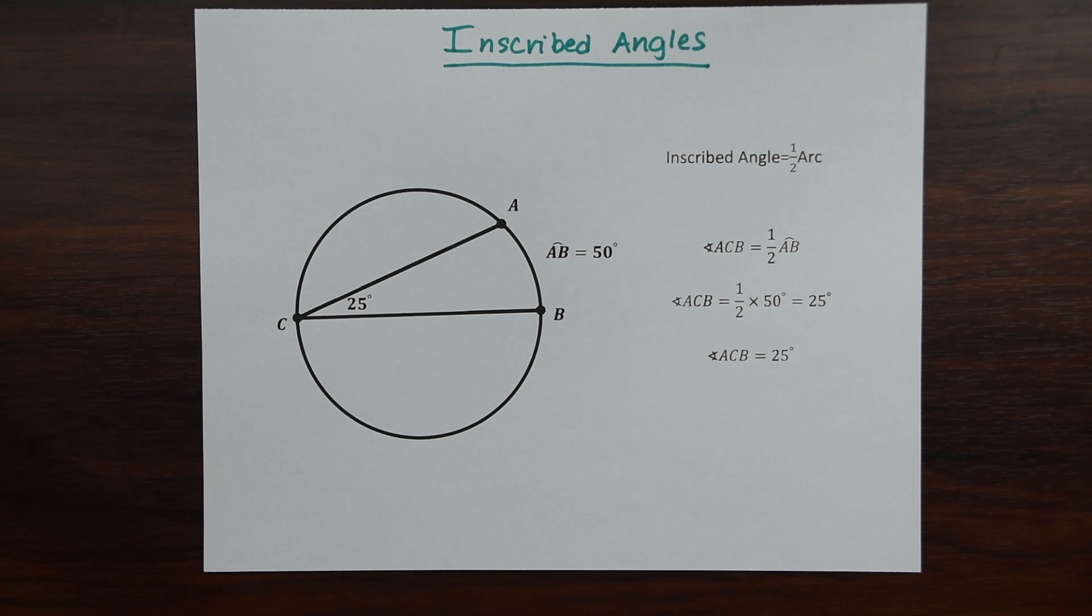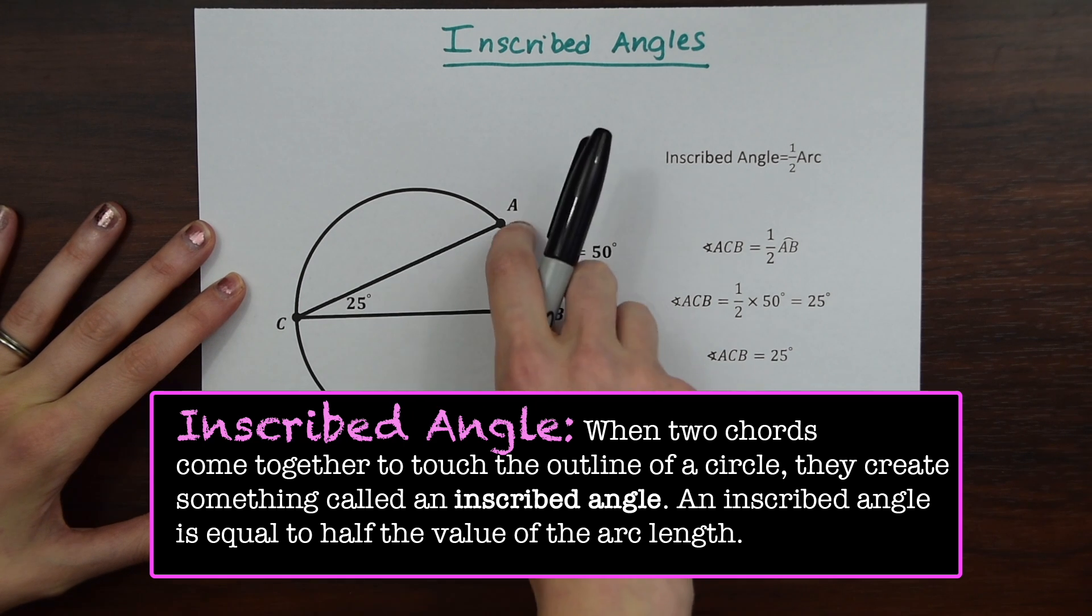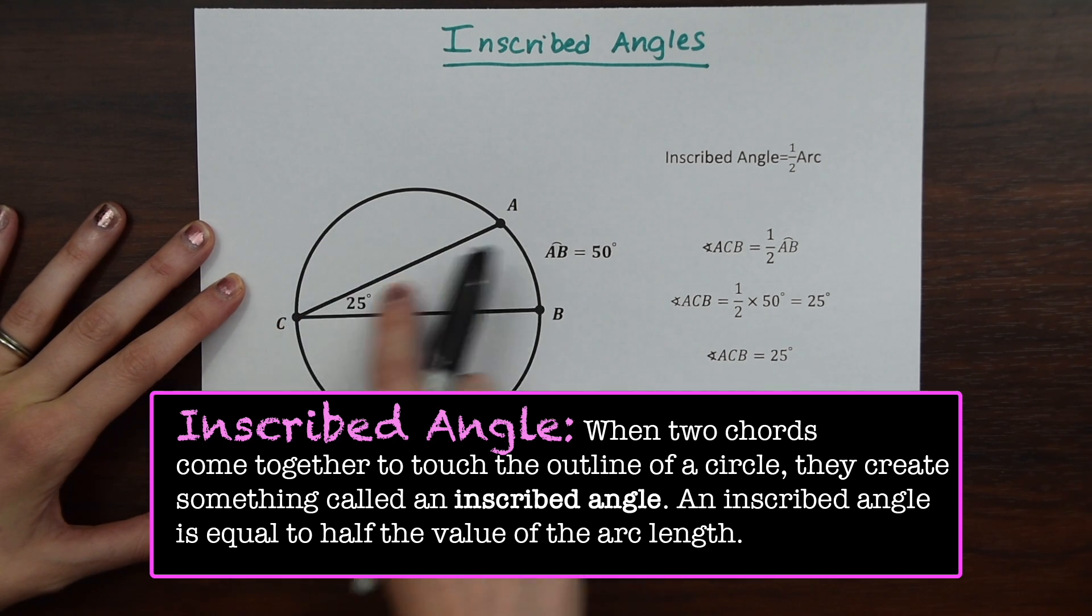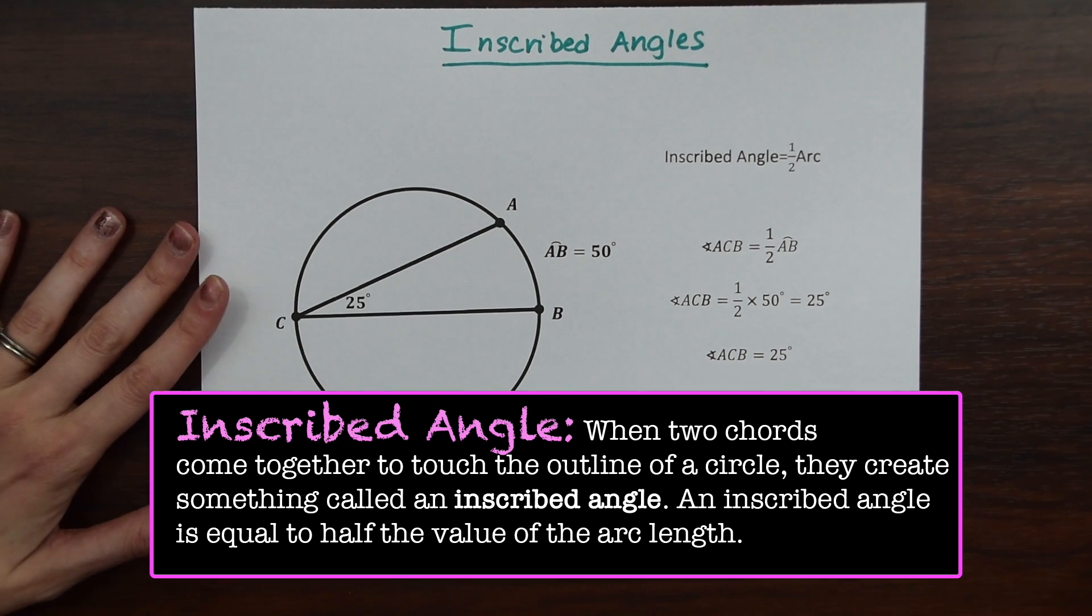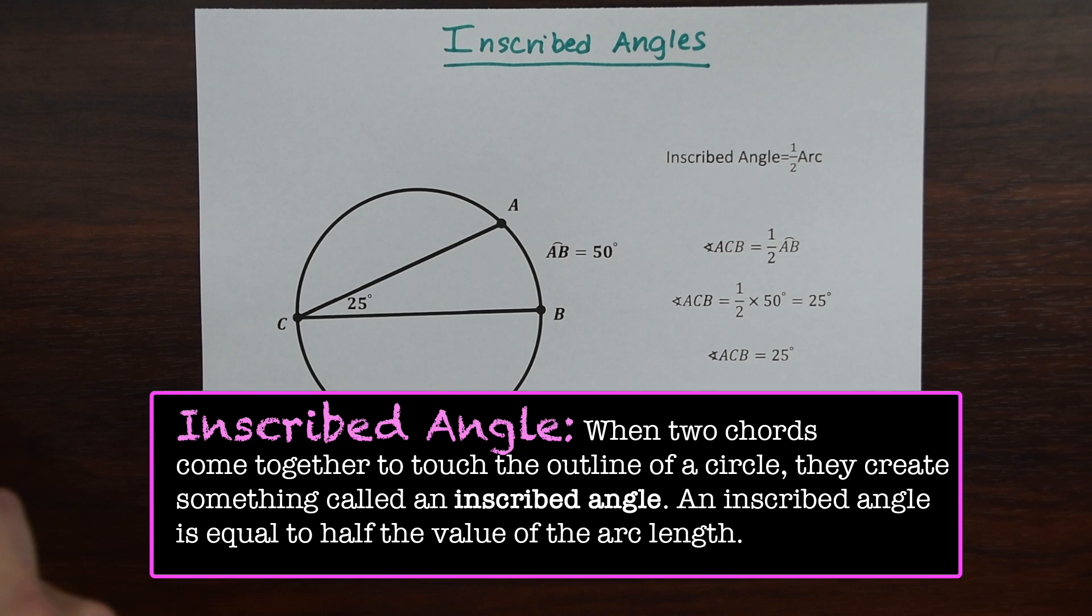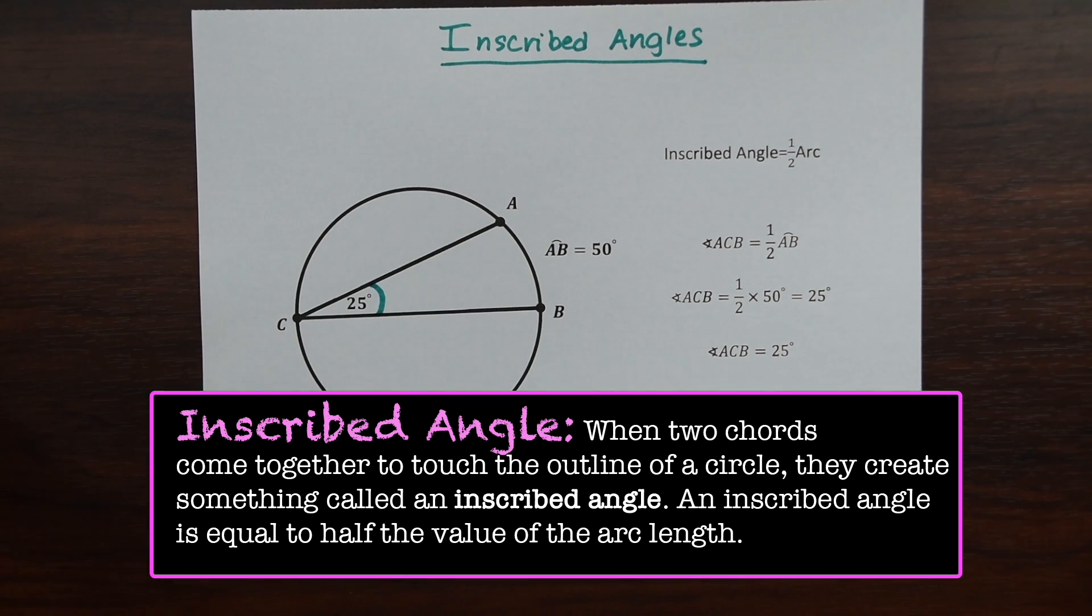So first let's go over what inscribed angles are. They happen when two chords come together to touch the outline of a circle. So here we have the outline of a circle, we have these two lines which are chords, they're not diameters, and they meet together at one point on the edge of the circle here at point C. So this angle that it forms right here, that's 25 degrees, this is the inscribed angle.